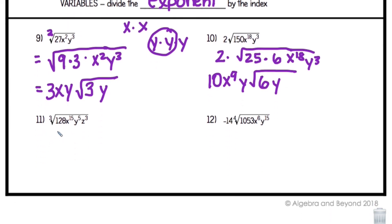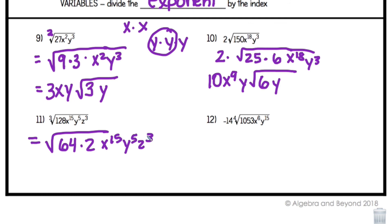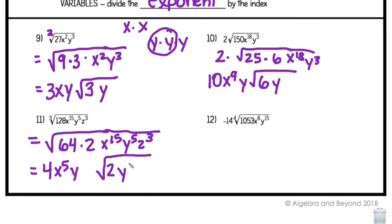Number 11 is a cubed root. My perfect cube going into 128 is 64 times 2 — 4 comes out. For x to the 15th: 15 divided by 3 equals 5, so x⁵ comes out. For y to the 5th: 5 divided by 3 gives 1 remainder 2, so one y comes out with y² left inside. For z cubed: 3 divided by 3 equals 1, so z comes out with nothing left inside. The answer is 4x⁵yz·∛(2y²).